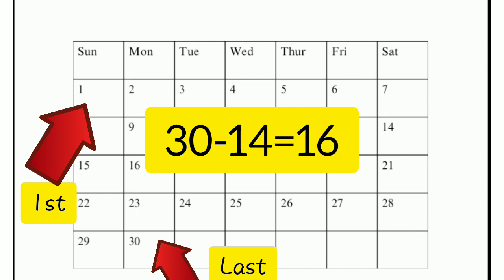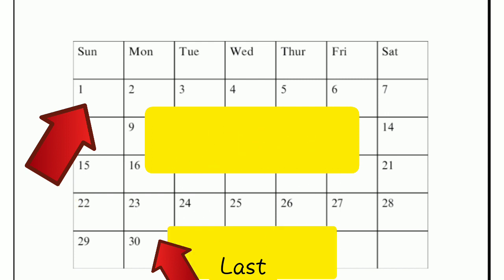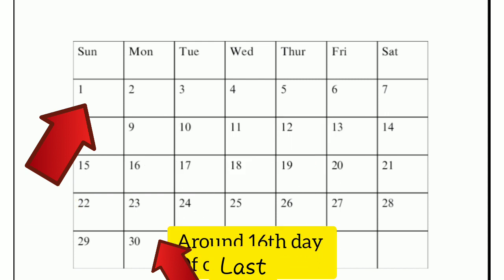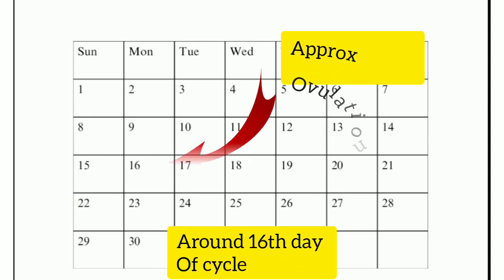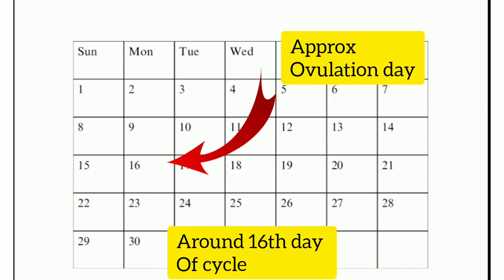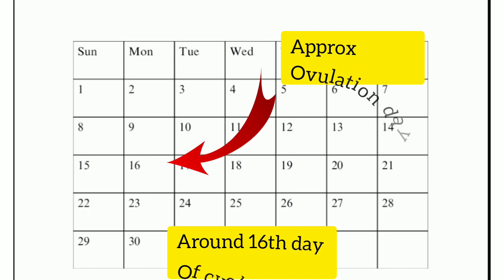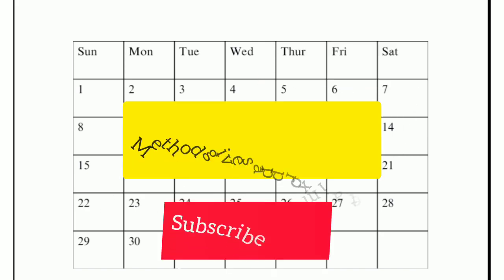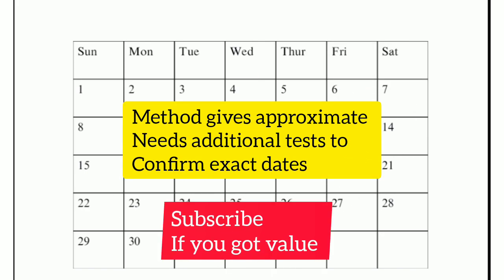So the ovulation date is going to be around the 16th day of the cycle. Be sure to check that — the ovulation date is going to be around the 16th day of the cycle.